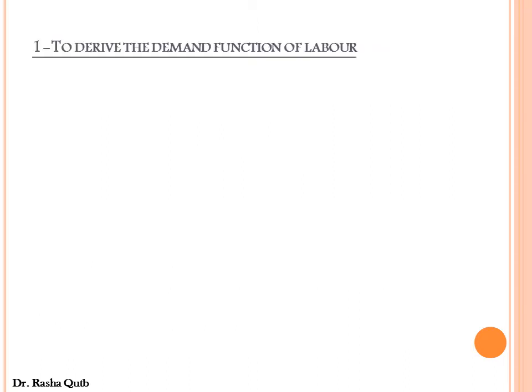First of all, the demand for labor function could be derived by two ways. The first way is when the marginal productivity of labor equals real wages. A perfect competitive firm aims at maximizing its profit and will continue hiring more labor as long as the marginal productivity of labor is positive. In order to maximize profit, the marginal productivity of labor should equal the real wage rate.